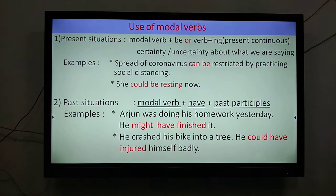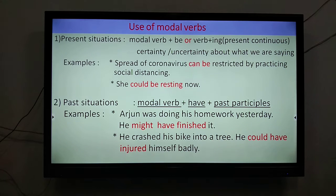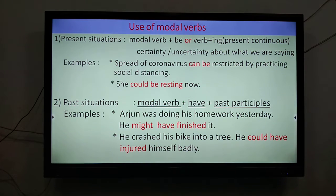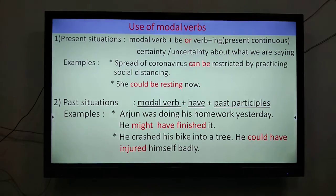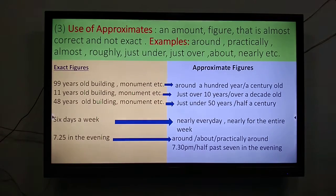Next sentence: he crashed his bike into a tree. Because the accident is finished, it has finished happening, it is an event in the past. We say he could have injured himself badly. That means modal verb plus have plus past participle. So, I am sure you will not have a problem using these.